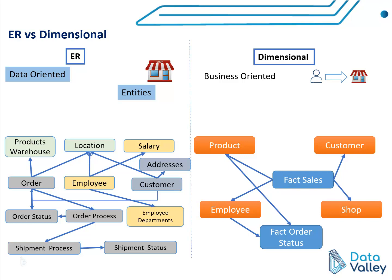We take this business process and break it down into facts and dimensions. Facts hold information about measurements, and dimensions hold information about business process details or event details — such as who is the customer, what is the product, who is the employee, and shop information.